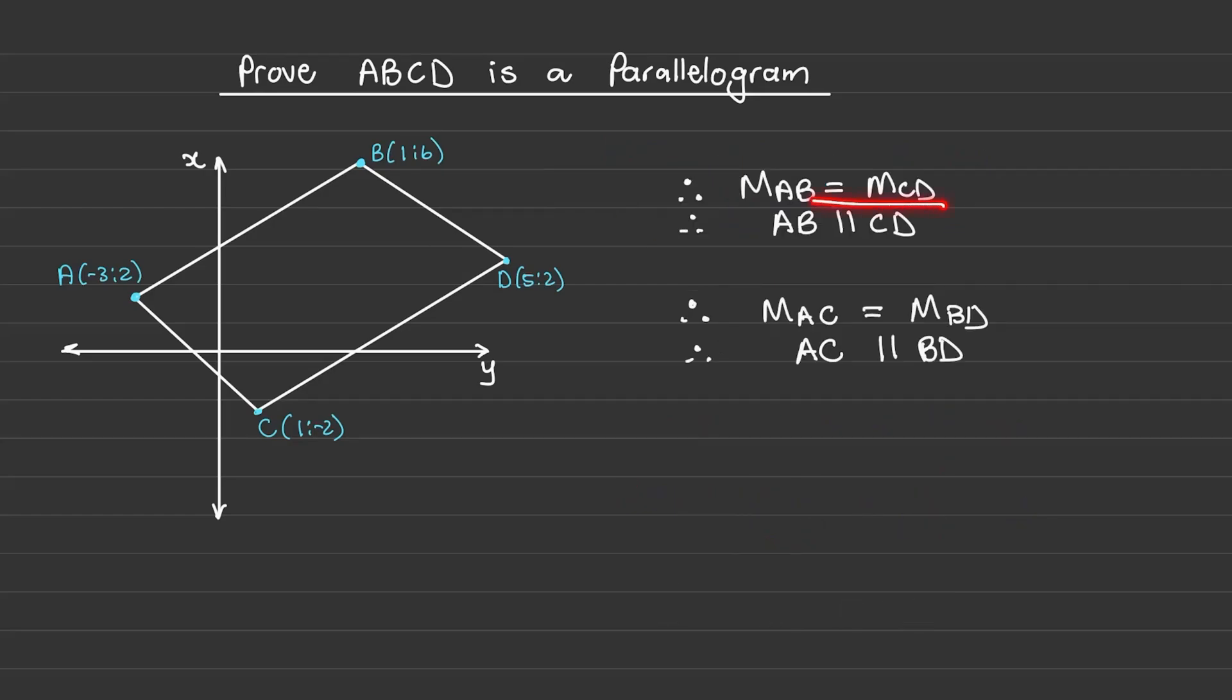Therefore we have proven AB is parallel to CD and AC is parallel to BD. So we can conclude that ABCD is a parallelogram. And what we have proven is that opposite sides are parallel.